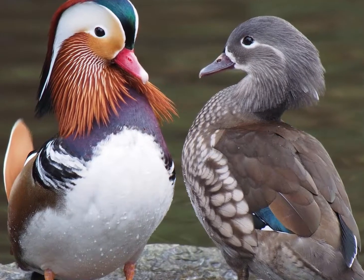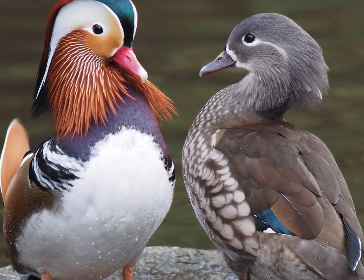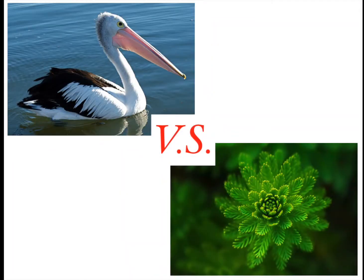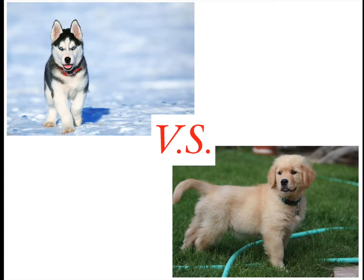The first term that you have to get acquainted with is variation, which implies a qualitative or quantitative difference, whether in the form of behaviour as well as morphology. Perceiving variations can be as clear as looking at two different living organisms, such as a plant and a pelican, and listing the different features. But they could also be differences within one species, such as huskies and golden retrievers within the dog species.